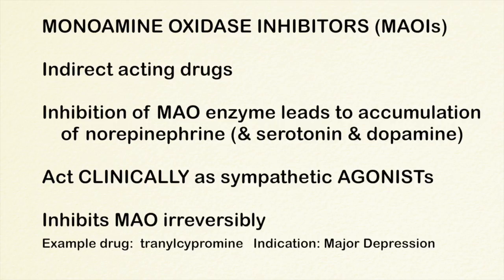Before moving on, I'd like to point out one other pharmacologic item of interest about MAOIs, like tranylcypromine. This drug binds covalently — it binds the enzyme, not the receptor, because it's indirect acting. This drug actually binds the enzyme covalently and irreversibly, so it destroys MAO forever because it's a chemical bond. This becomes very important because if you stop the drug to switch the patient to a different drug, you have to wait for your body to make more MAO before adding another drug.